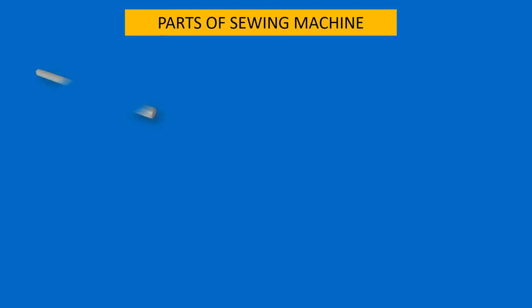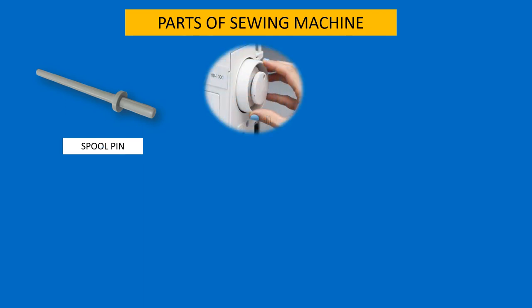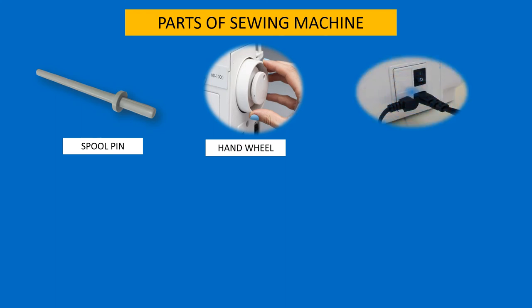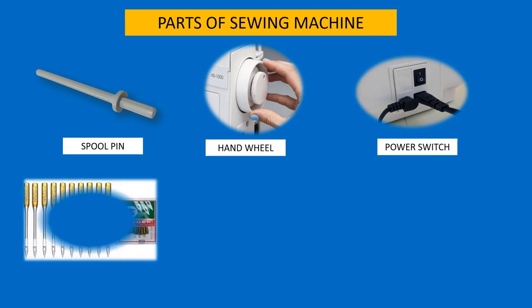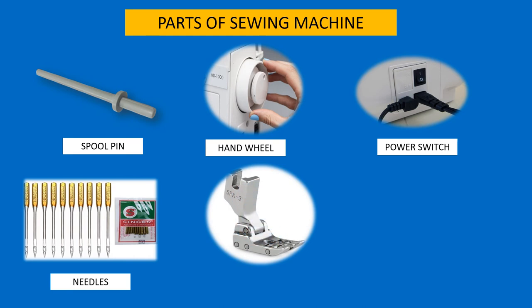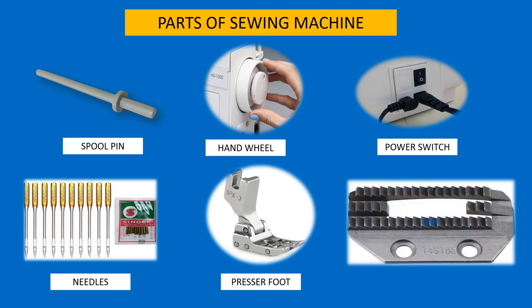Parts of sewing machine activity: identify what part of the sewing machine each picture shows. The first picture is the spool pin. The next picture is the hand wheel. Then the power switch. Then the needle. The next picture showing something like a foot is the presser foot. And the last one is the feed dog.